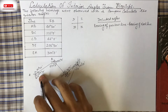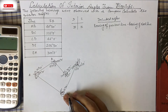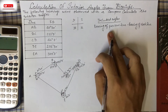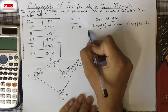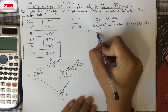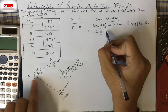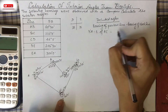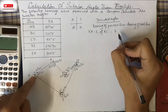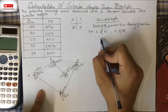Now let's use the formula method. The included angle equals the bearing of the previous line minus the bearing of the next line. For angle A: previous line is EA, next line is AB. So we write: Bearing of AE minus Bearing of AB.